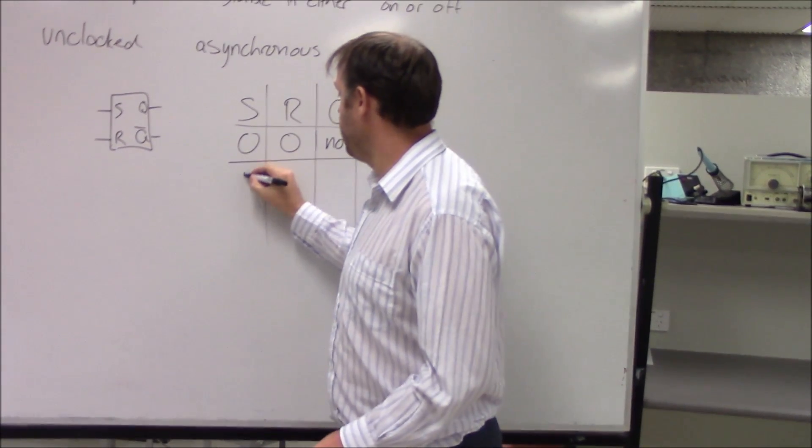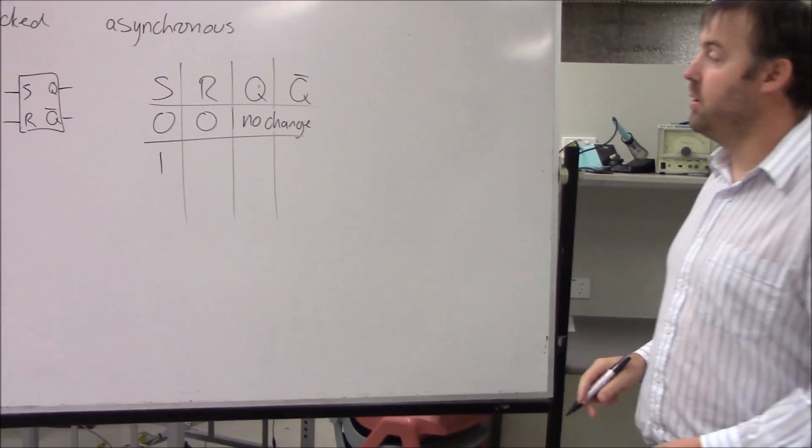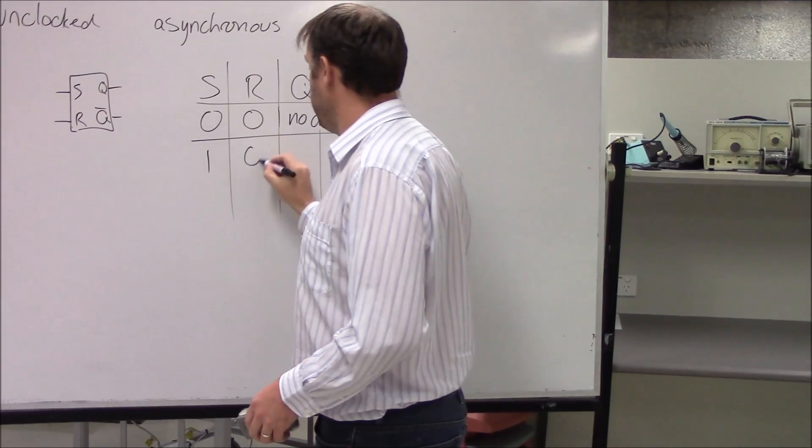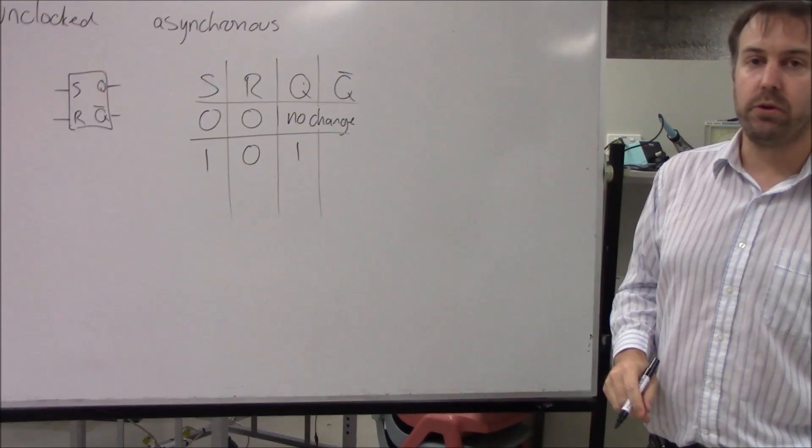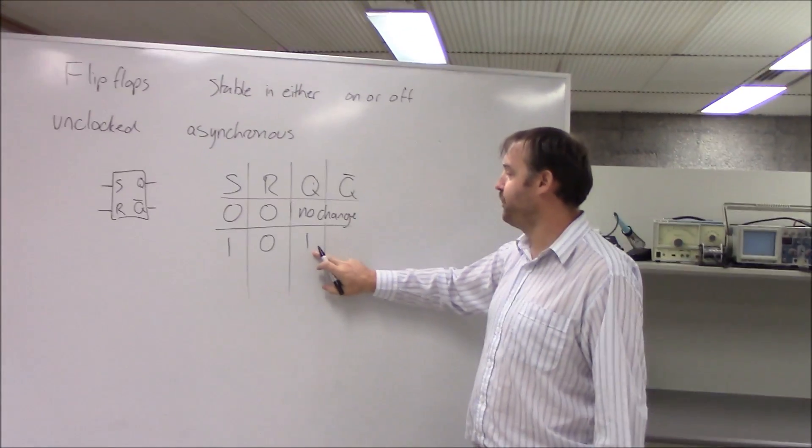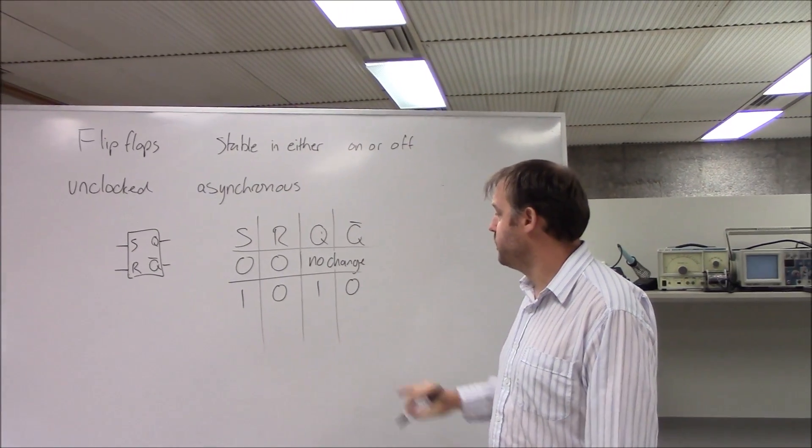If I set the set pin to logic high and the reset pin to logic low, then Q will, regardless of what it was before, be one, and Q-bar will be zero, that's the opposite.